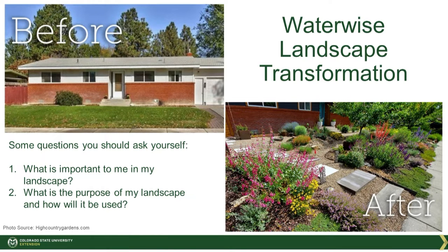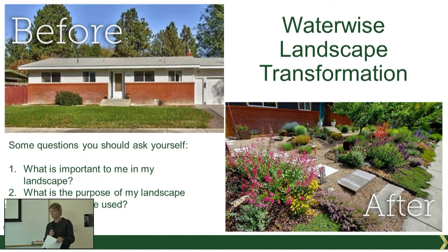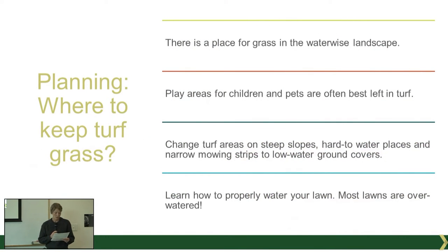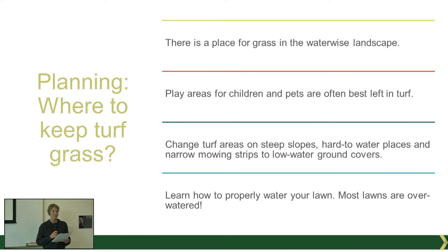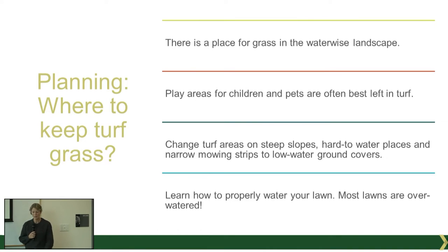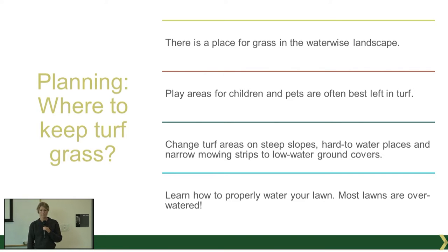Some questions that are nice to ask yourself: what is important to me in my landscape? What plants do I personally really love that I want to incorporate? What's the aesthetic I'm going for? And very importantly, how is this area going to be used? Which is a good time to talk about grass. There is a place for grass in a water-wise landscape. Lawns are very appealing and inviting. If you have children and pets, you're going to want lawn. You can limit the turf grass to a manageable size in a specific area, and avoid planting grass on steep slopes or areas that are hard to water. In those areas, consider drought-tolerant ground cover.